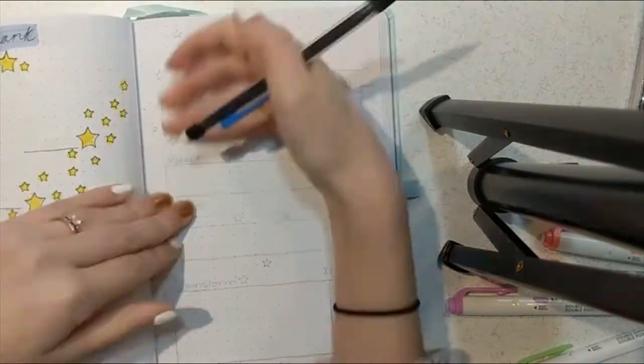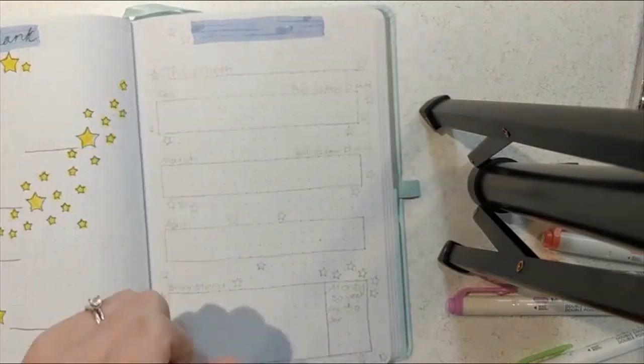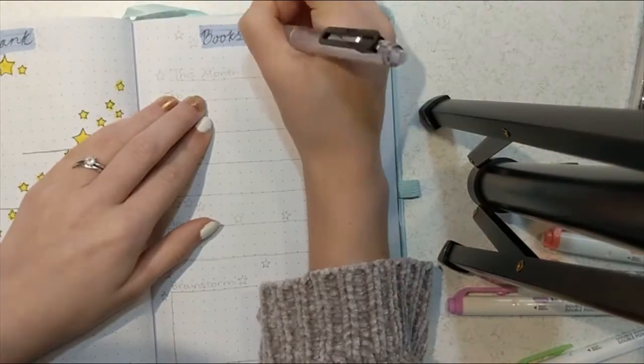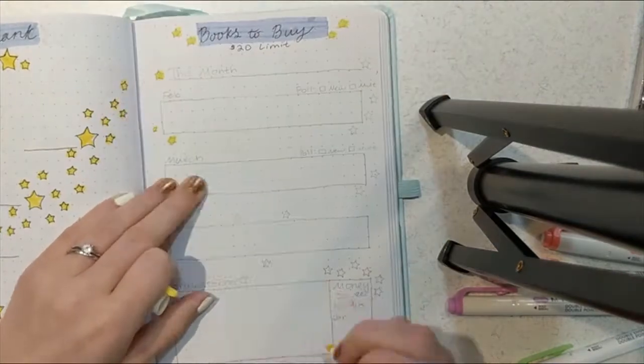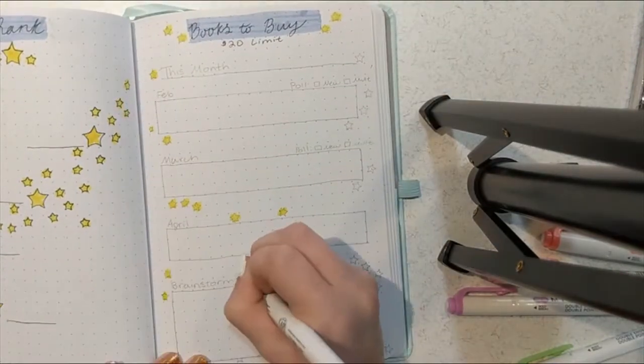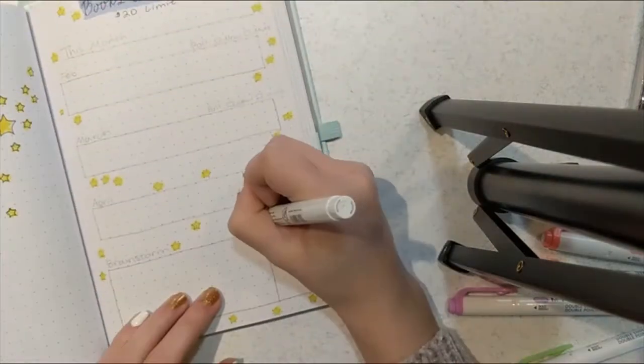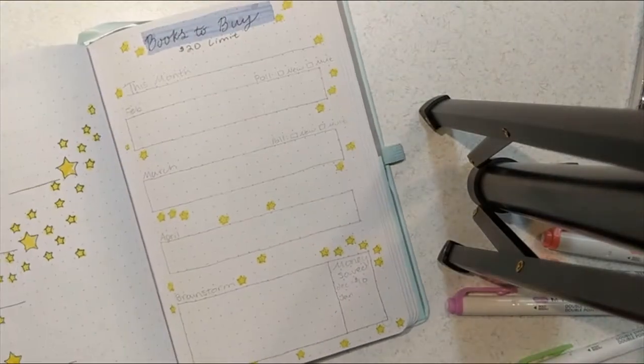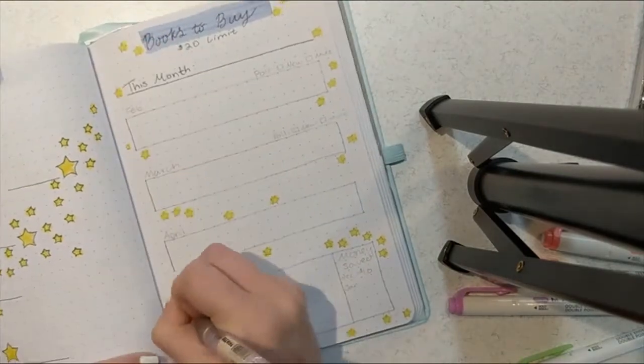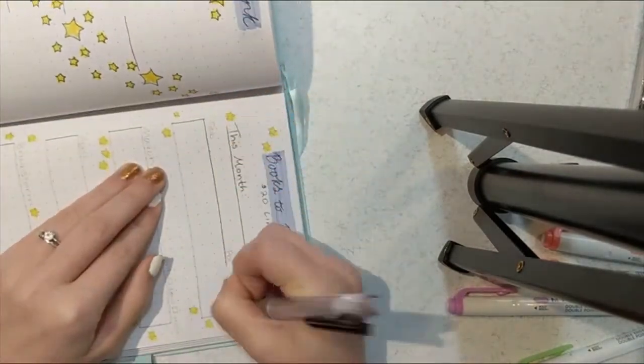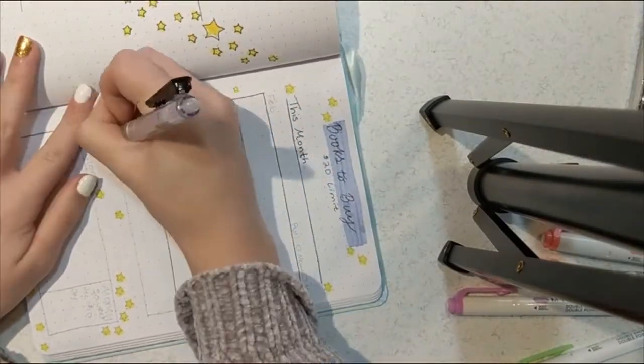Next, I move on to the books I plan on purchasing this month and brainstorming for the next couple of months. This is a new spread that I added last month in December as having a $20 per month limit is something quite new for me. So I decided that I want to have a spread so that I can keep track of how many new release books and how many backlist books I want to buy. And if I end up only buying one book for less than $20, then I can use the money that I saved next month to maybe buy a collector's edition of a book.